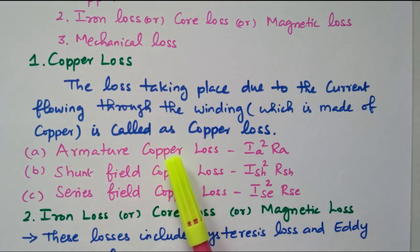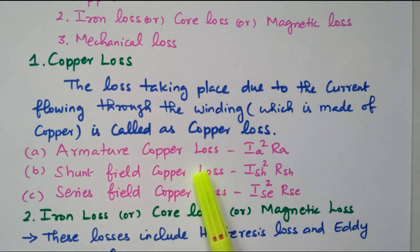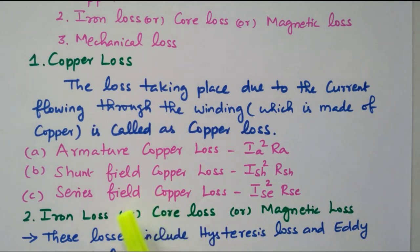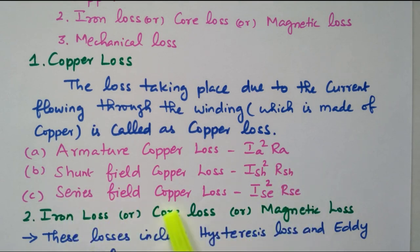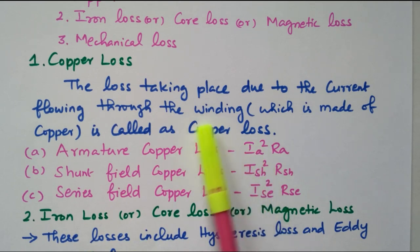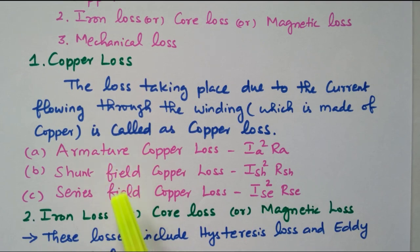The winding is available in three different places. That is: armature copper loss, Ia squared into Ra. And field winding — it may be series field or shunt field. Shunt field copper loss: Ia squared into Ra squared. Similarly, series field copper loss: Ia squared into Ra. The loss due to the winding is nothing but copper loss, because windings are made up of copper. That copper is available in armature as well as field.